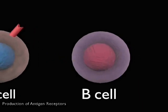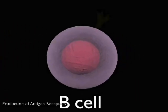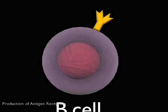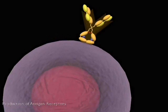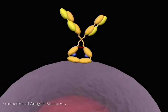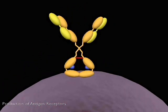B cells use cell surface antibody as their antigen receptor, while T cells use a related, but distinct molecule, the T cell receptor, or TCR. Each T cell or B cell recognizes just one antigen, but the population as a whole can recognize any antigen that a pathogen may produce.